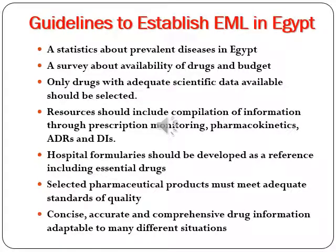Guidelines to establish an essential medicine list in Egypt include: statistical data about prevalent diseases in Egypt, survey about availability of drugs, only drugs with scientific evidence should be selected, and resources should include all information such as prescription monitoring, pharmacokinetics, adverse drug reactions, drug-drug interactions, and hospital formularies. Selected pharmaceutical products must meet adequate quality standards, and concise, accurate, and comprehensive drug information should be available.